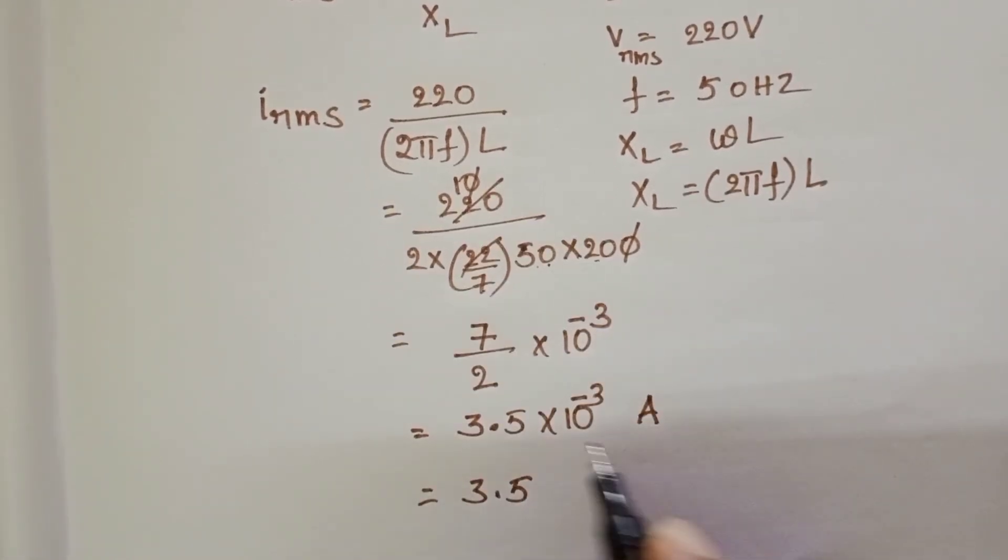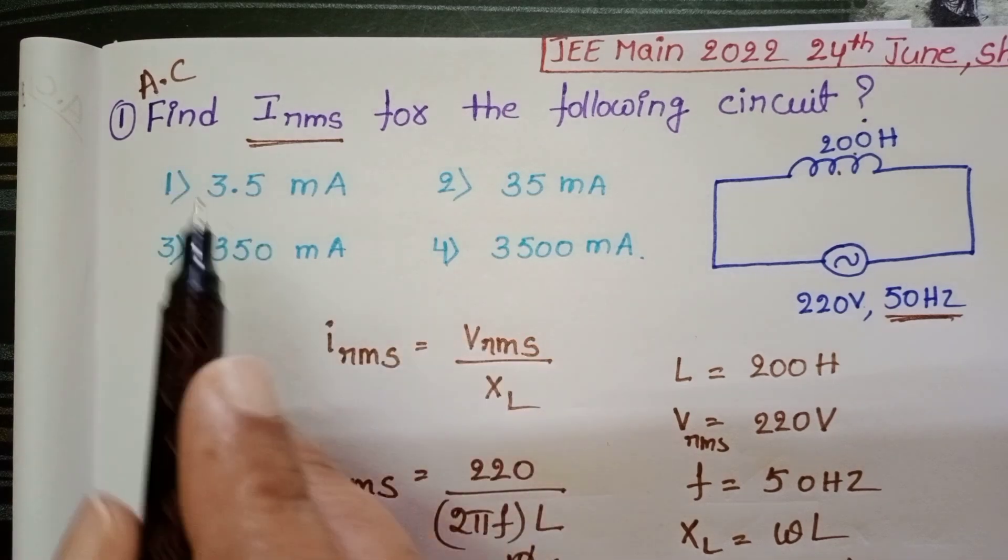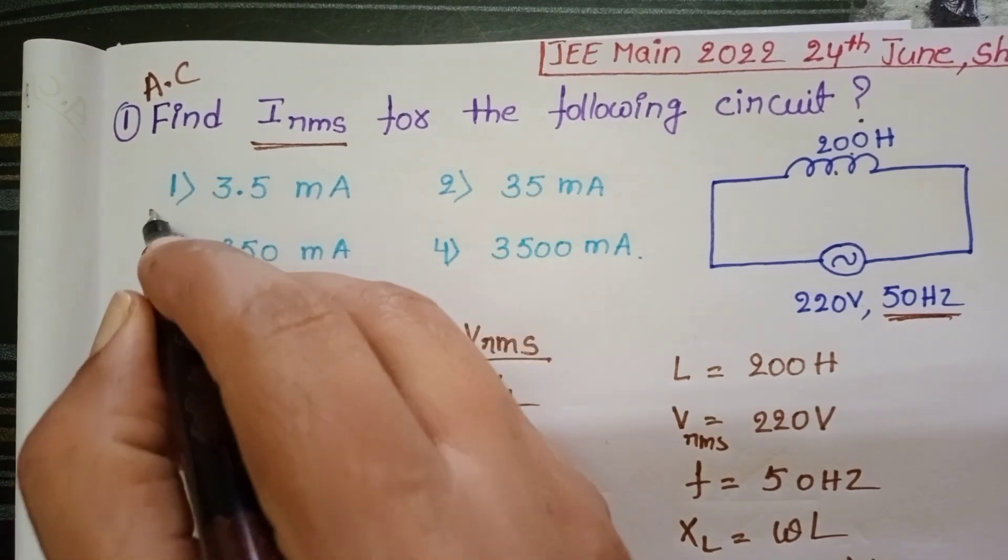3.5, in place of 10 power minus 3 take milli. Now check the given options. First option 3.5 milli, correct.